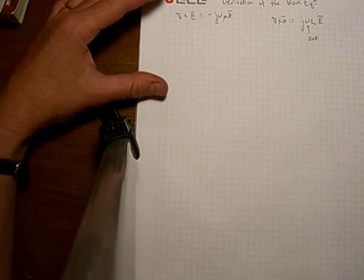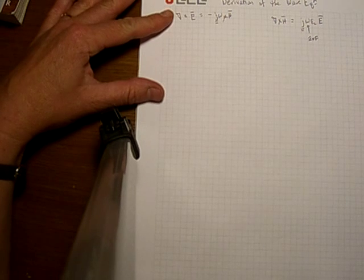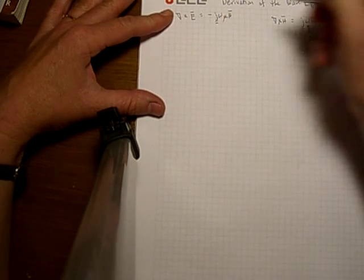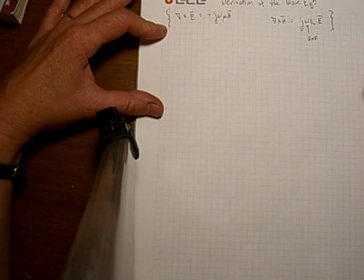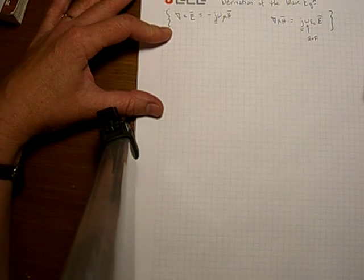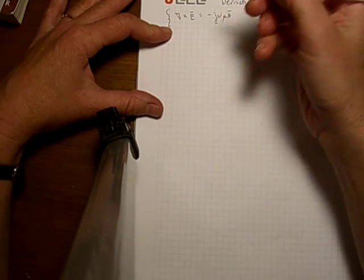So this is the frequency domain form of Maxwell's equations. The wave equation is going to take these two first order coupled differential equations and convert them to one second order coupled differential equation. I'll show you how we're going to do that.